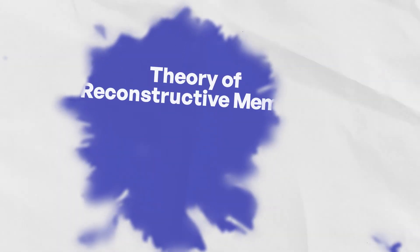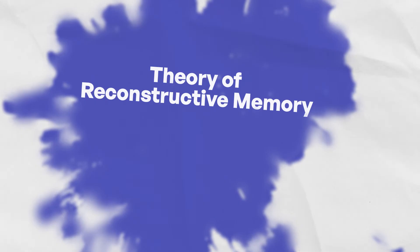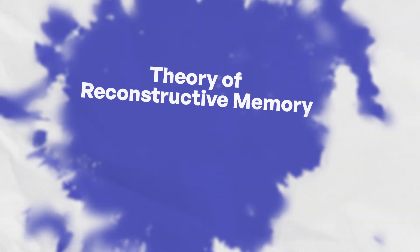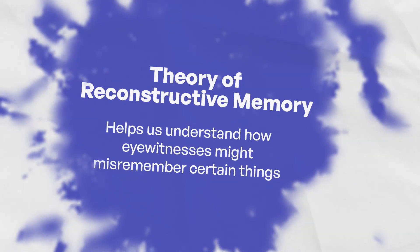Our memories can easily get distorted. Schemas can make us ignore or change things that happened. It can explain how your memory of a day trip is totally different to your brother's memory of the exact same trip — maybe when your brother tried to recall the event, he accessed different schemas to you. The theory of reconstructive memory has some real-life applications: it can help us understand how an eyewitness to a crime might misremember certain things.